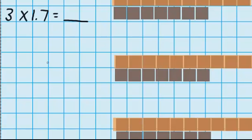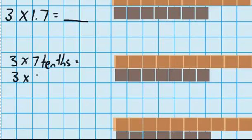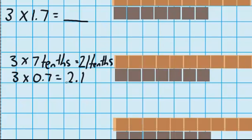Let's start by working out how many tenths I've got. You can see I've got three groups, and in each of those groups are 7 tenths. Another way I could write that is three groups of 0.7. I know that three lots of 7 tenths gives me 21 tenths, and 21 tenths is the same as two wholes and 1 tenth. I get the two wholes because there are 10 tenths in a whole, so 20 tenths is two wholes, and then I've got that extra 1 tenth.